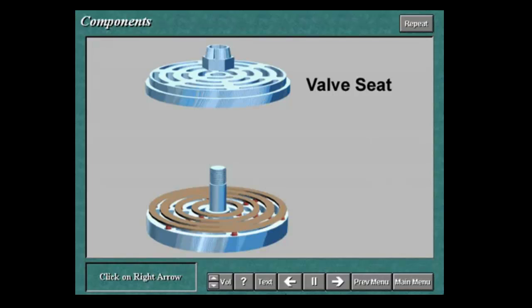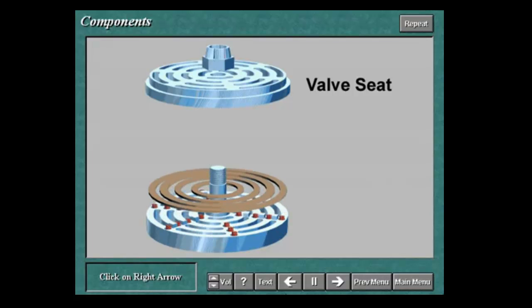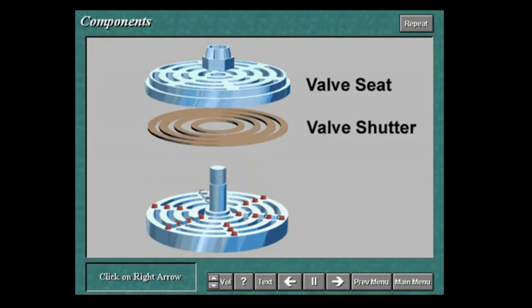The seats are mounted in housings arranged along the body of the cylinder. The valve shutter is the component that alternately opens and shuts the flow ports.